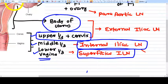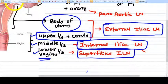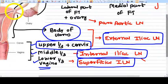Now it is becoming easy. Superficial inguinal lymph node: lower one-third vagina. Middle one-third vagina: internal iliac lymph node. Upper one-third vagina with cervix with body of uterus goes to external iliac lymph node.